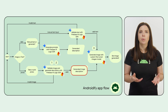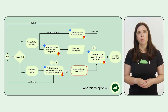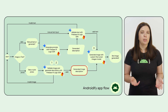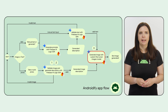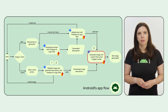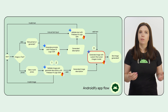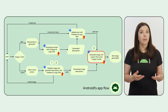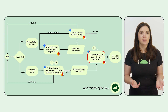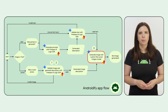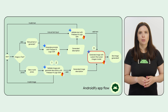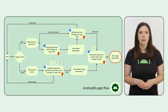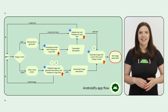And then we also generate a detailed description of what the person is wearing. Once we have that image description, we then call the Firebase AI Logic SDK, which internally calls Imagine, to generate the bot version of yourself. For the Androidify case, we have a custom fine-tuned Imagine model, but you can make fun images with standard Imagine too. And then you get a bot image at the end.